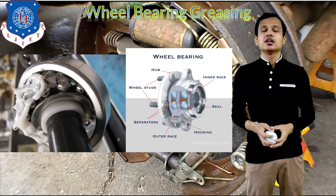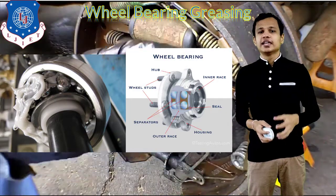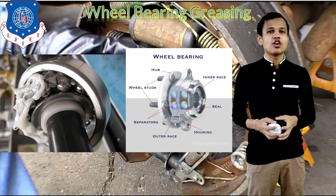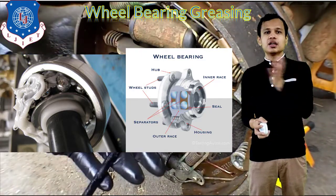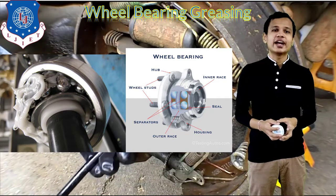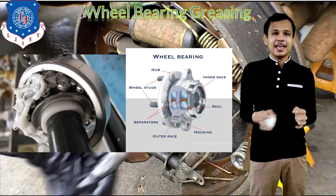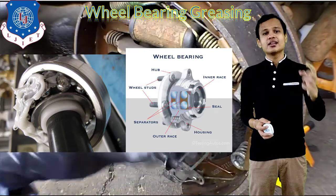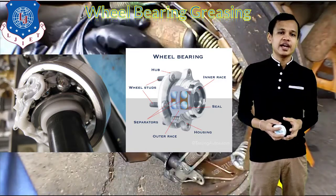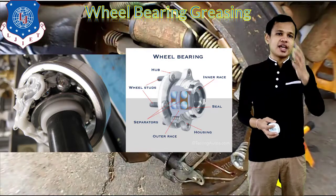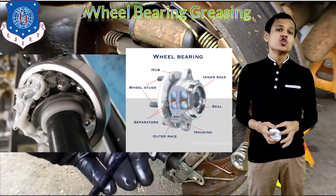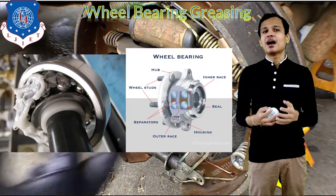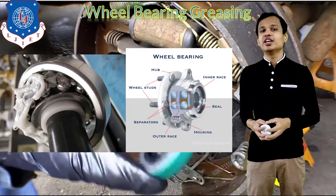You can see in the figure that the wheel bearing greasing has been shown with detailed components. The wheel studs are provided on which our wheel is mounted. On the inner side, a seal is provided that properly caps the wheel bearing so that grease does not come out. The inner rail, outer rail, and hull of the wheel bearing are provided, and between them separators are provided that are connected to the bearings. The greasing of the bearings in the wheel will be done at regular intervals to get proper power transmission from the axle to the wheels.